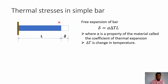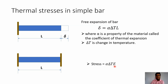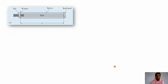Now if we fix this bar at both ends, the free expansion will not take place. Because of this fixity at both ends, thermal stresses are developed in the bar, and these thermal stresses are equal to alpha × delta T × E, where alpha is the coefficient of thermal expansion, delta T is the change in temperature, and E is the modulus of elasticity. For the given composite assembly, both ends of the bars are fixed, so we consider it as a statically indeterminate problem.